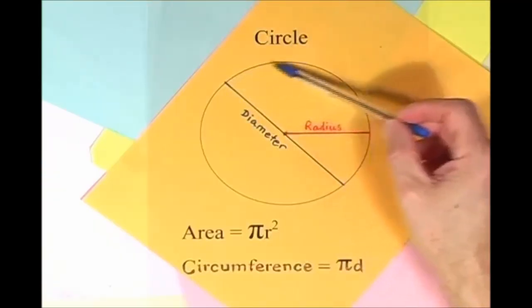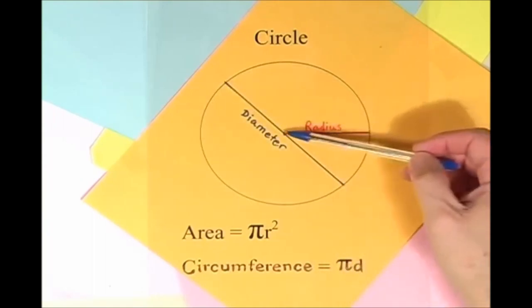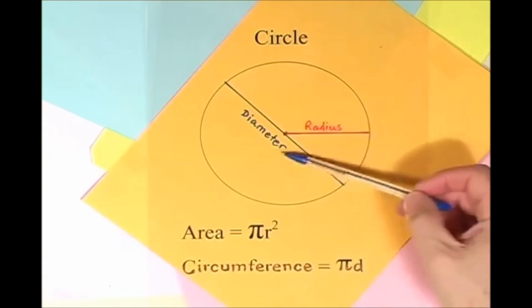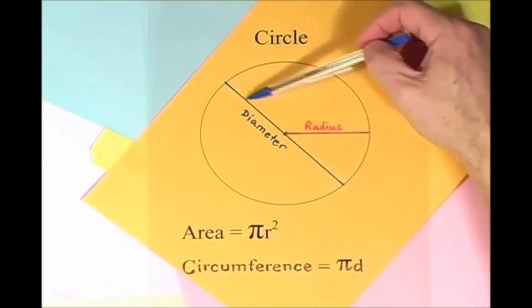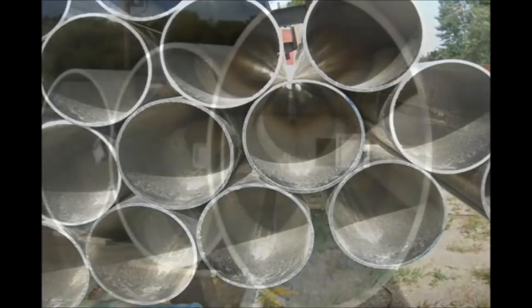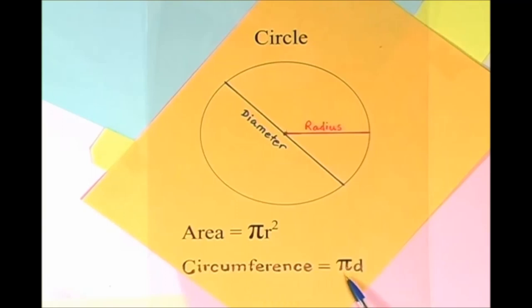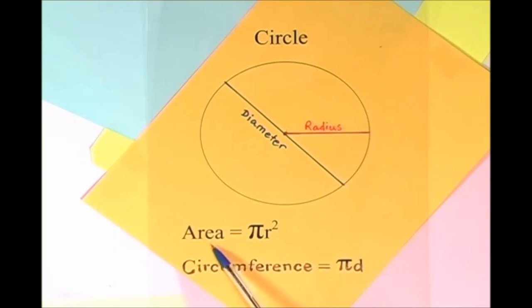Here is a circle, it knows how to get around. It has a radius from center to rim. And its diameter's a line that goes from side to side while passing through the center, now isn't that simple. Pi r squared sounds like area to me, when I need a circumference, I'll just use pi d.